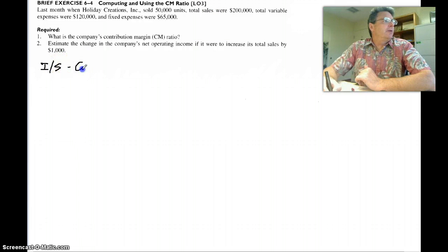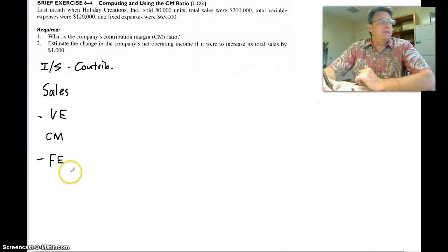So our contribution format income statement begins with sales. Subtract our variable expenses. That will give us contribution margin. Subtract our fixed expenses from that and we have our net operating income.